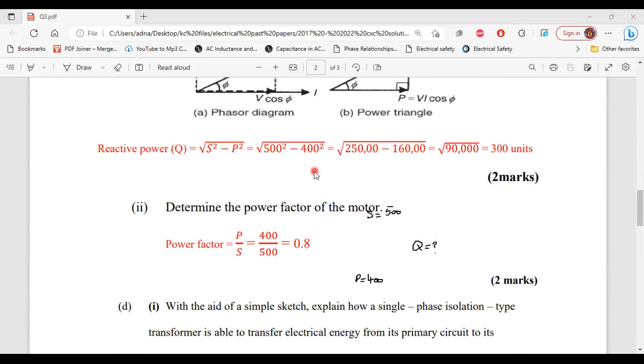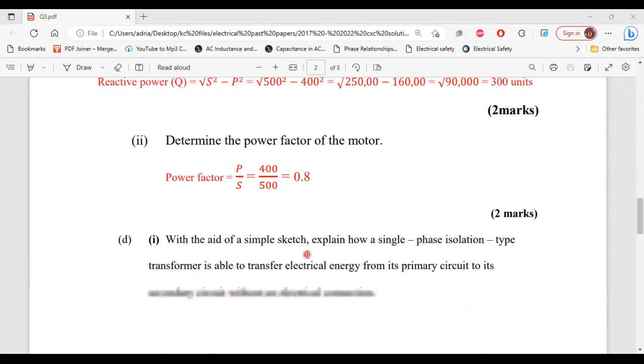For part two, it says determine the power factor of the motor. All right. So power factor is equal to true power divided by apparent power. So true power, that's 400 units divided by apparent power, which is 500 units will give us 0.8. So 0.8 here is the power factor. And that's it for part C. All right. So let's move on to part D.